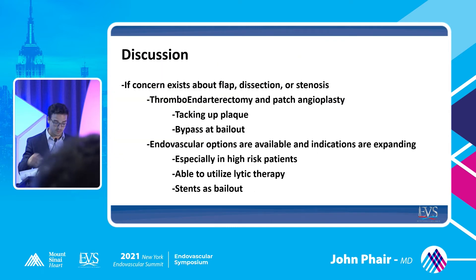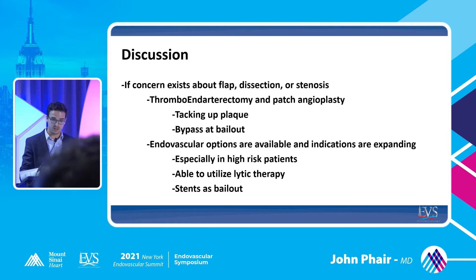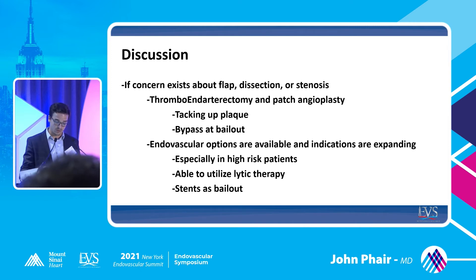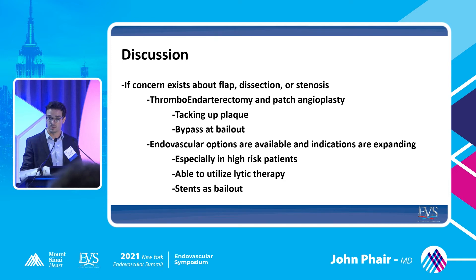If concern exists about a flap, dissection, or stenosis, something we can always fall back on is open repair, usually with thromboendarterectomy and patch angioplasty. It's important to tack up the plaque. If you're not able to tack up the plaque, you may have to do a hybrid procedure — get contralateral access and place stents to tack down the plaque. You could always use bypass as a bailout. Endovascular options are available and indications are expanding — it's especially useful in high-risk patients. You're also able to utilize lytic therapy, though you're more concerned using lytics after a cut down. And you could always use stents as bailouts.